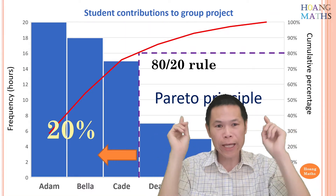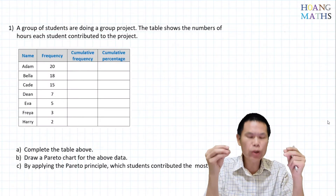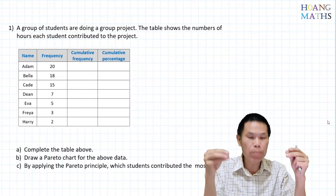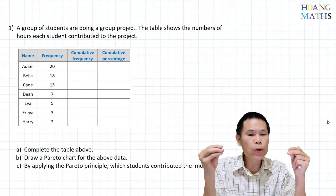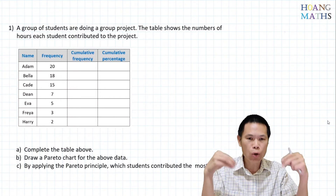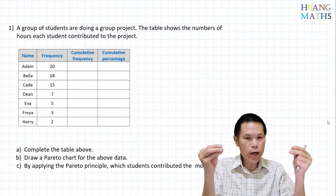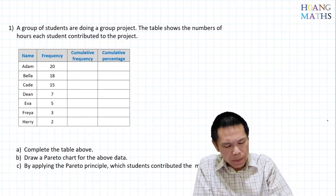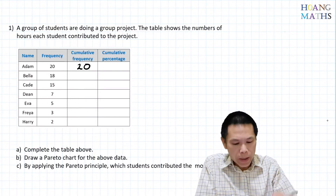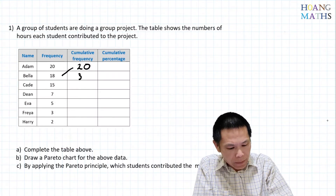Before we draw a Pareto chart we need to complete the table first. Note that the frequency table must be in order from the highest frequency to the lowest. Now we work out the cumulative frequency table. The first step: we have 20, so we write that down. The next one: 20 plus 18 gives us 38.